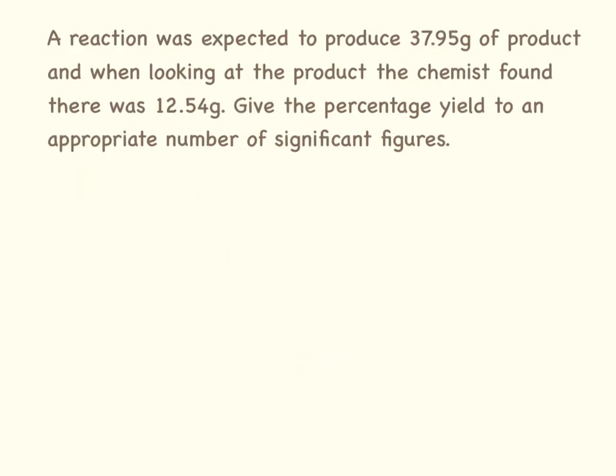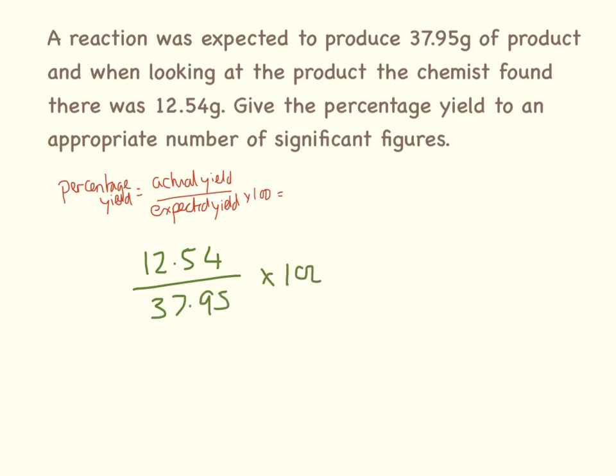The reaction was expected to produce 37.95 grams but actually only 12.54 grams were produced. Calculate the percentage yield and give your answer to an appropriate number of significant figures. Our actual yield was 12.54, our expected yield was 37.95, then we times that by 100. 12.54 divided by 37.95 equals times 100 equals 30.04 percent.